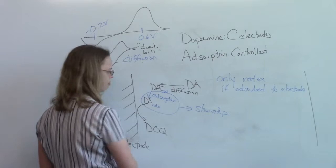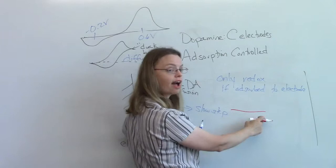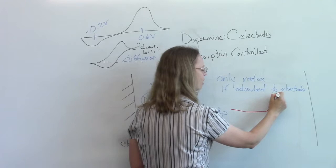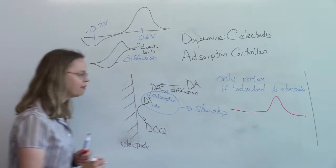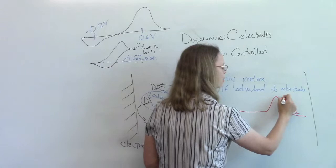And so what happens is, as I start to go out, once I reach the potential where I can do the oxidation, and there's enough time for the electron transfer to have happened, I start to oxidize dopamine. And I'm still at a potential sufficient to do it. But my peak comes back down to zero, to baseline.